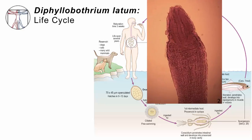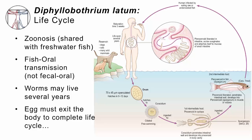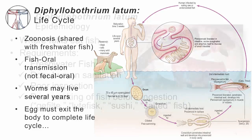In the case of Diphyllobothrium latum, the adult has a head with two suctorial grooves, or bothria, and that's where the name Diphyllobothrium latum comes from. This is a zoonosis — an infection shared with fish that spend at least some of their time in freshwater; salmon is one of those. The spread is fish-to-mouth, not fecal-oral, and the worms can live inside the adult host for up to several years. The egg must get out of the human body in order for the life cycle to complete itself.